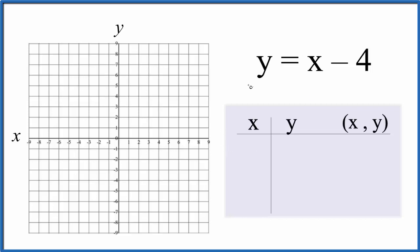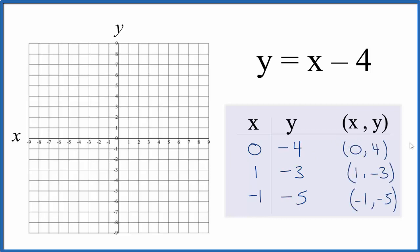Let's start out by putting in 0 for x, because that'll show up on our graph. So 0 minus 4 is minus 4. Let's put in 1, so 1 minus 4 is minus 3. And how about negative 1: negative 1 minus 4 gives us minus 5. So these are the points we'll graph for the equation y equals x minus 4.